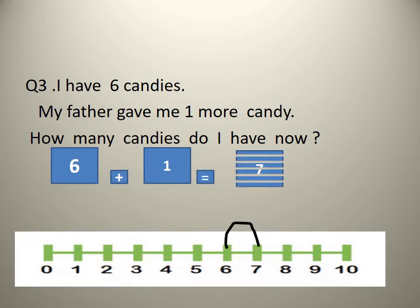I have 6 candies. My father gave me 1 more candy. How many candies do I have now? So how many candies do I have? 6. And how many did father give? 1. So 6 plus 1. Now look at the number line. So 6, and how many jumps? 1 jump. So the answer is 7.